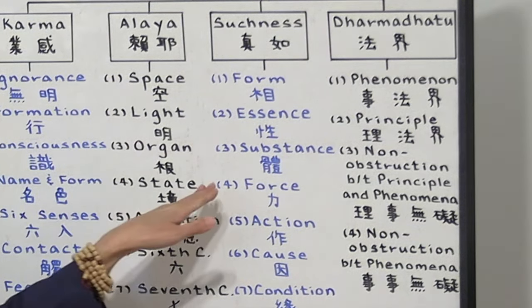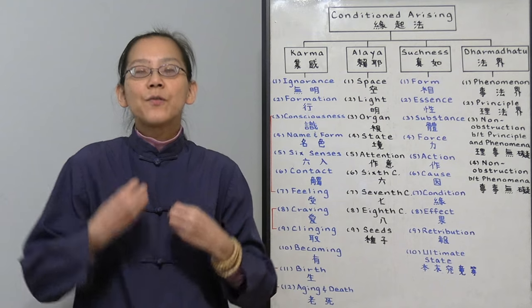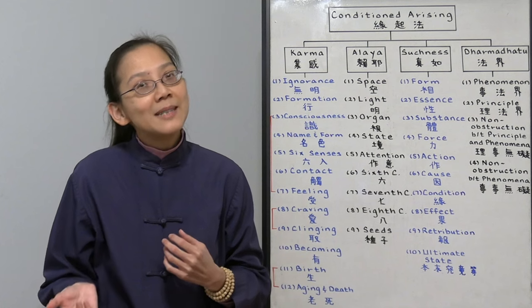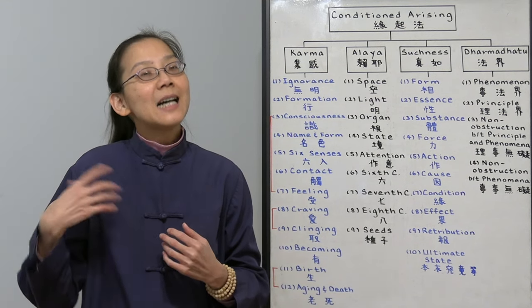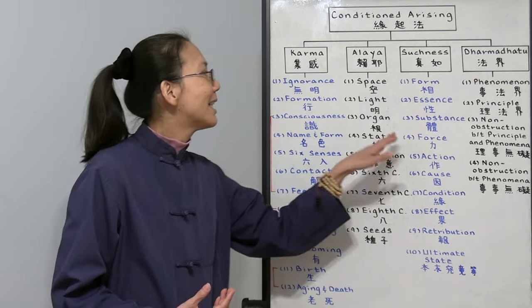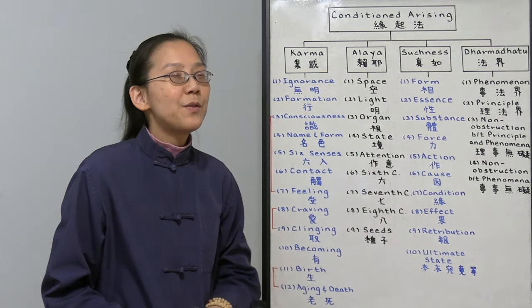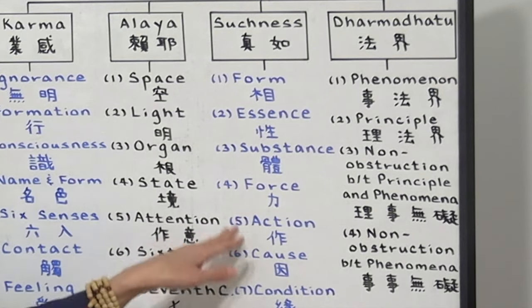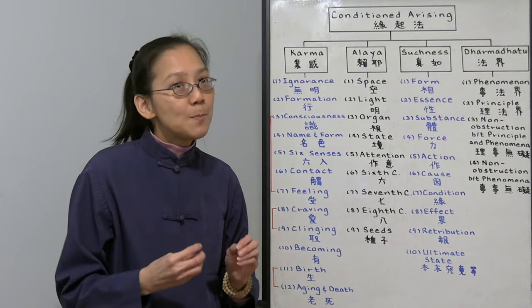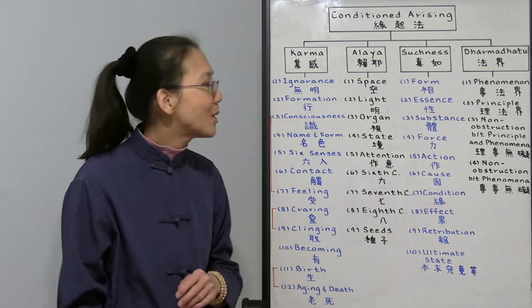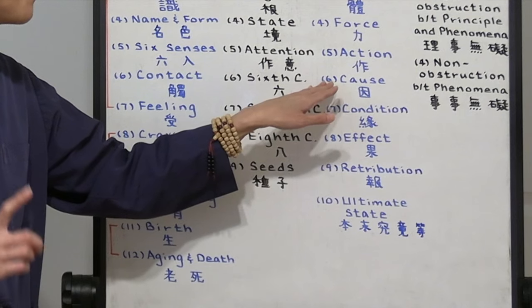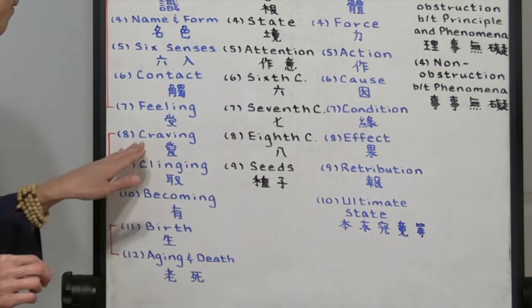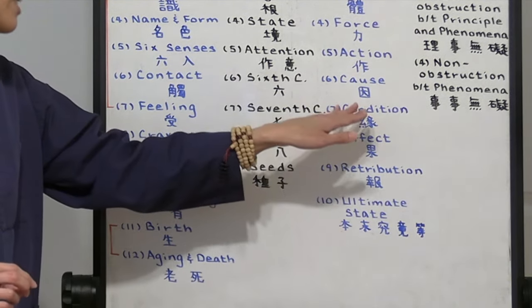Then we have the force. What is your energy force? If you are a heavenly being, you love to do wholesome deeds. You're always kind and compassionate. That's your kind energy. But if you are a hell being, your energy is anger. Because of our force, we take action in terms of wholesome or unwholesome deeds. Our karmic deeds is our cause. Basically the same as becoming, craving, and clinging. That's our condition.